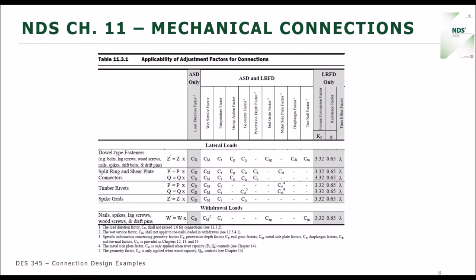This is what the adjustment factors table would look like for connections. We're going to be dealing with withdrawal loads and lateral loads for dowel-type fasteners. The withdrawal loads are in the bottom row and give you your W value, which is your withdrawal basis value. Then the lateral loads we're calculating for dowel fasteners will give us the Z value. Those are the two we're going to be dealing with primarily today.